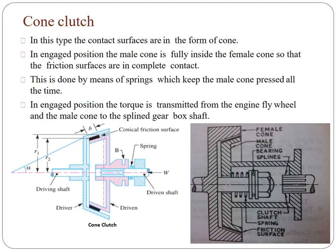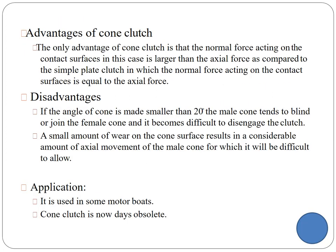In the engaged position, the torque is transmitted from the engine flywheel and male cone to the gearbox. The advantage of the cone clutch is the normal forces acting on the contact surface. The disadvantage is that if the cone angle is made smaller than 20 degrees, the male cone tends to bind with the female cone and becomes difficult to disengage. Also, a small amount of wear occurs between the cone surfaces. This clutch is used in motorboats, but the cone clutch is nowadays obsolete.